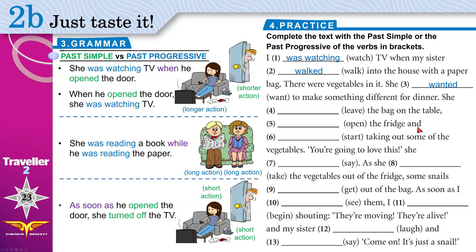'She leave the bag on the table, open the fridge, and start taking out some of the vegetables.' One long sentence, three actions. Did they overlap or happen at the same time? No — this happened first, finished, then the next, then the next. We give past simple to all of them: left, opened, started.